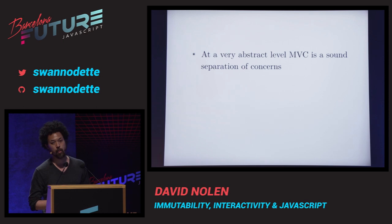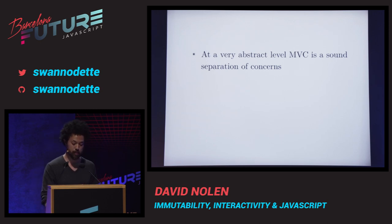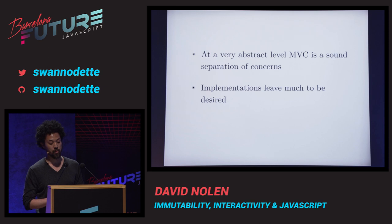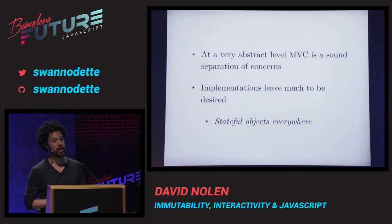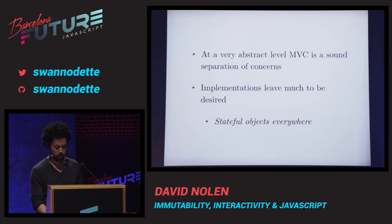To a large degree, I think this is because at an abstract level MVC is actually a sound separation of concerns. You have users interested in a certain domain, you model that domain, and they want to interact with it via controls. You have to manage the domain model and whatever the user actually sees. What I'm going to question today is implementations — MVCs have traditionally been done over stateful objects, but I think it's possible to preserve all the things we like about MVCs without stateful objects.